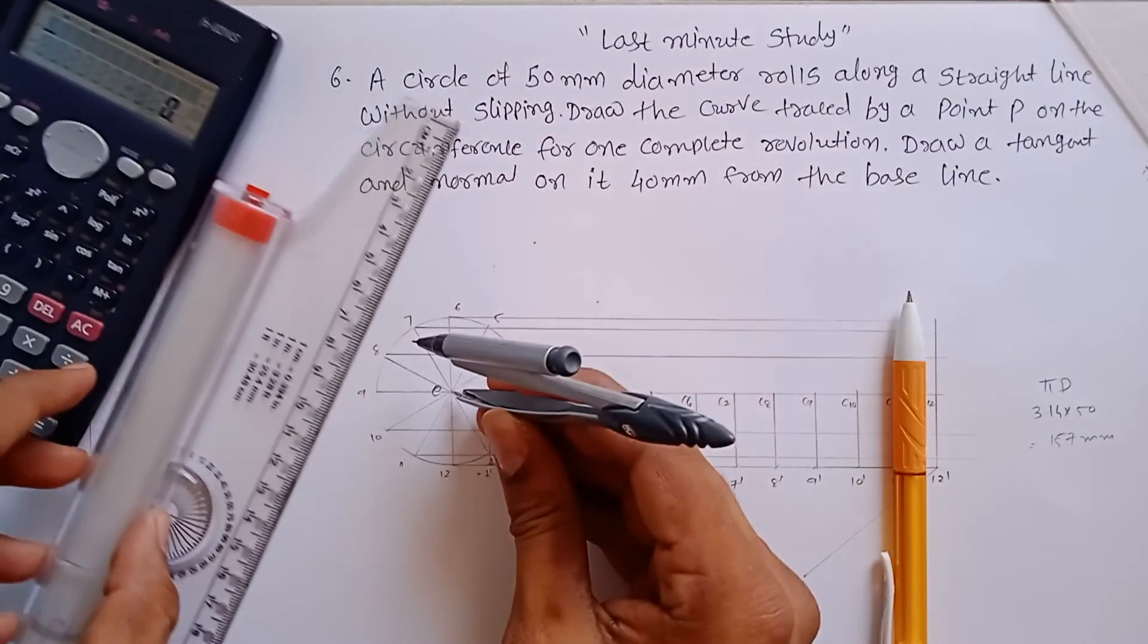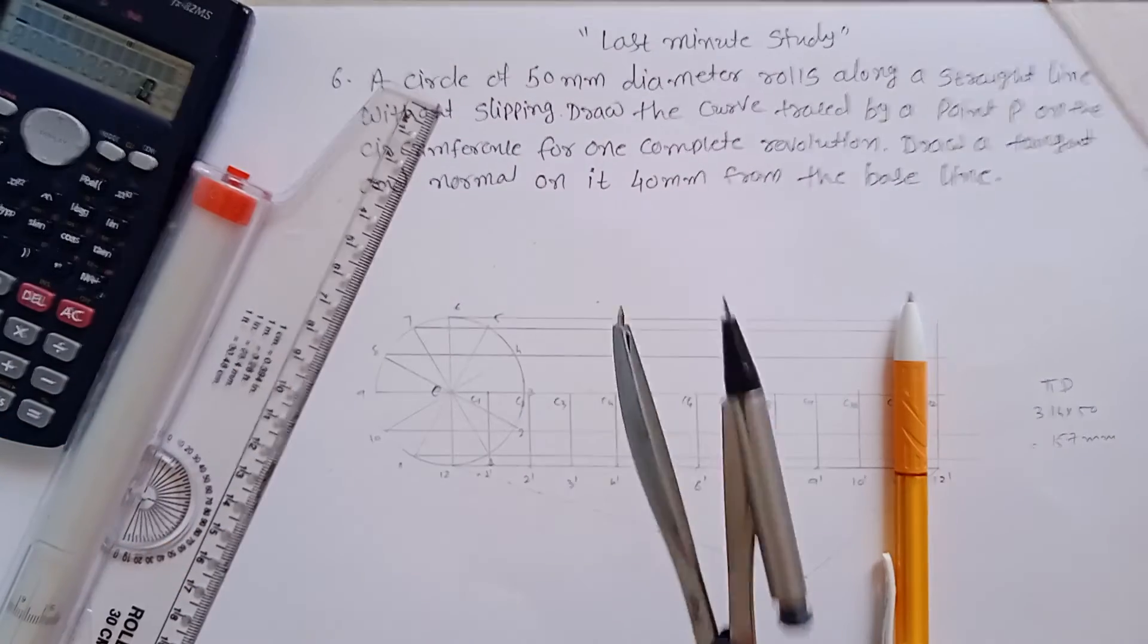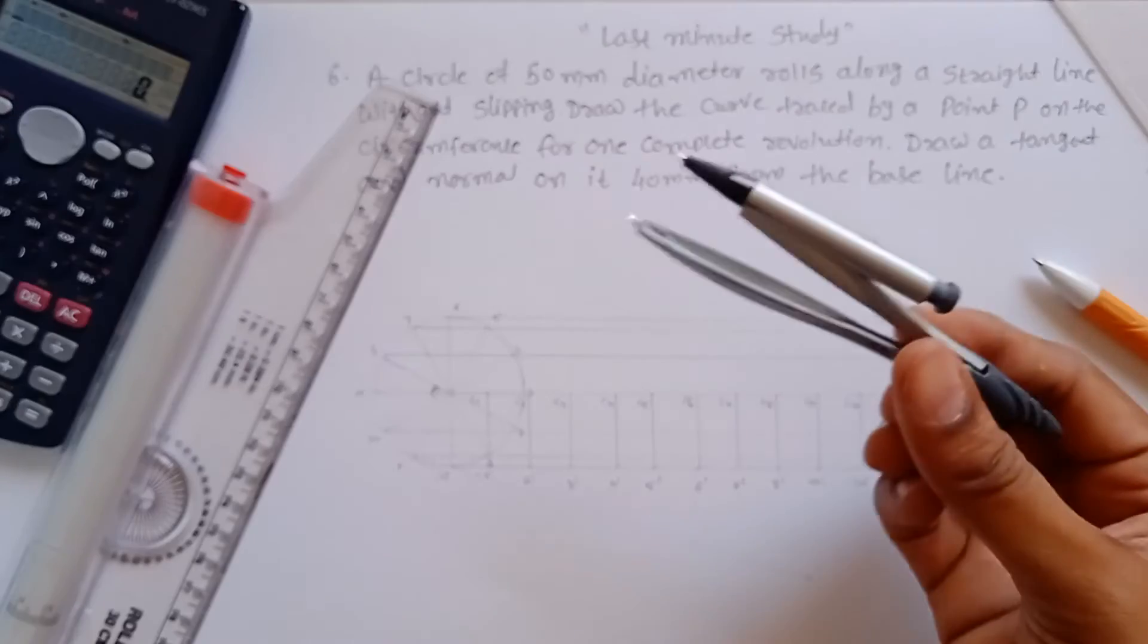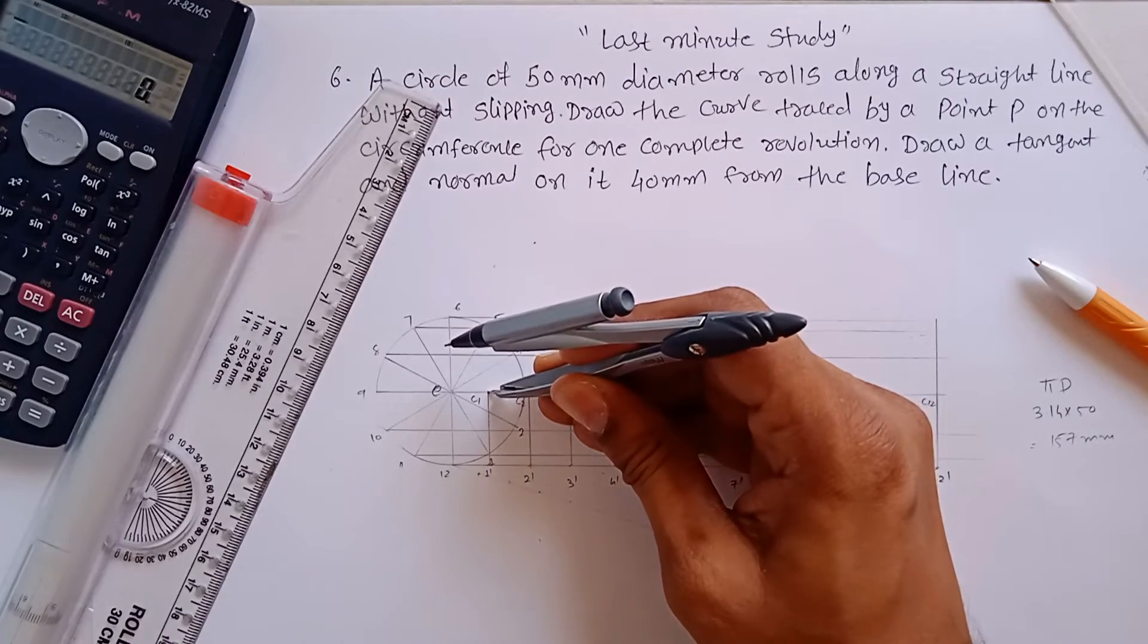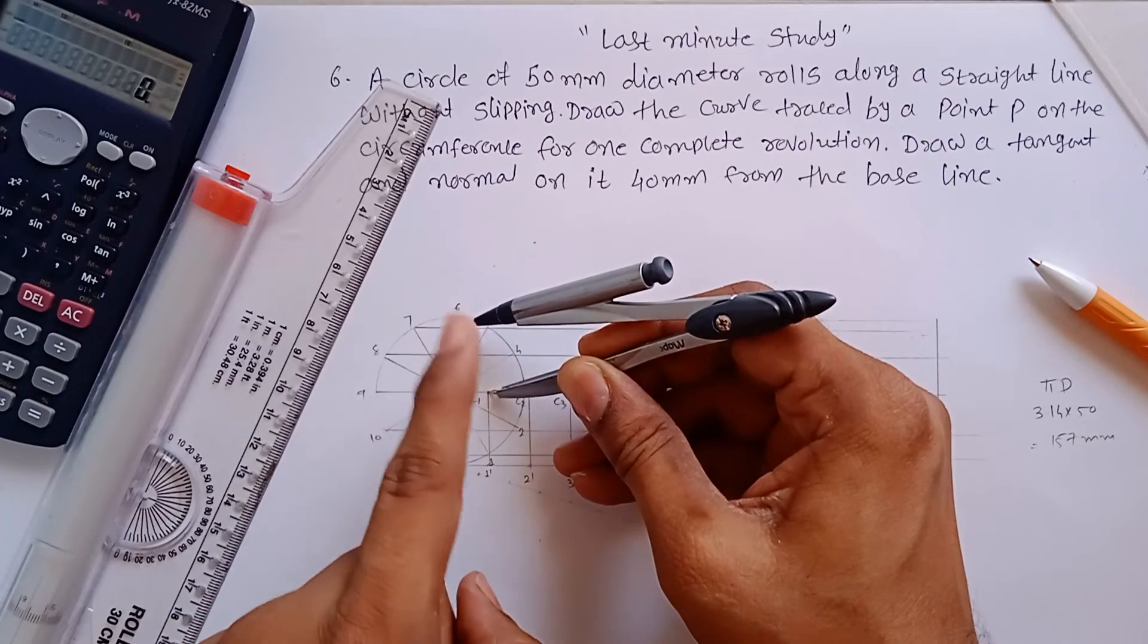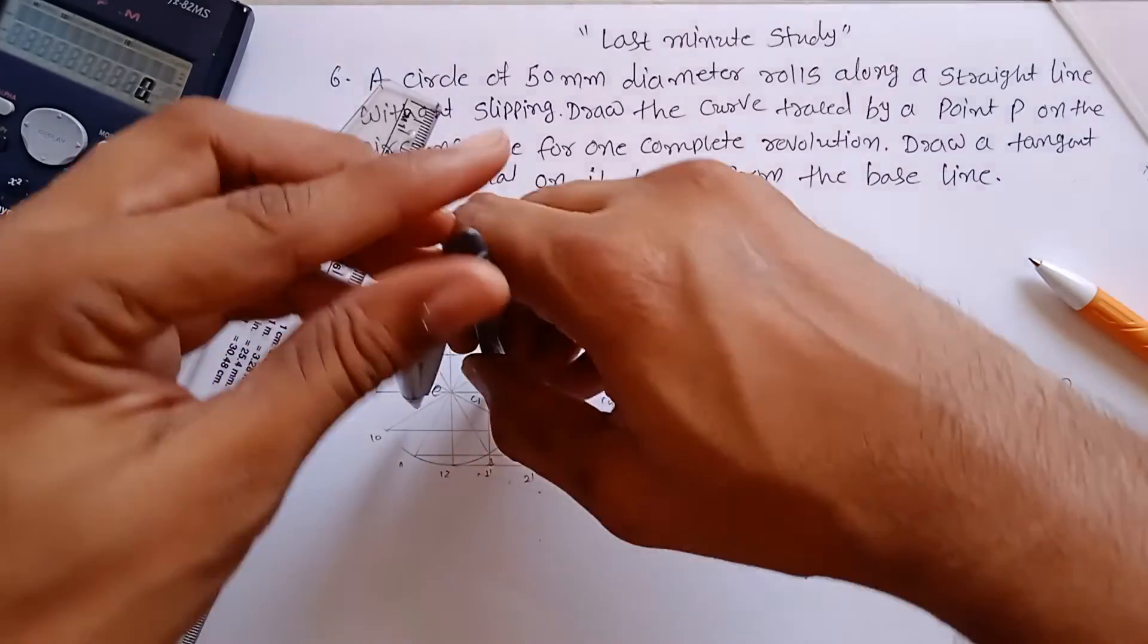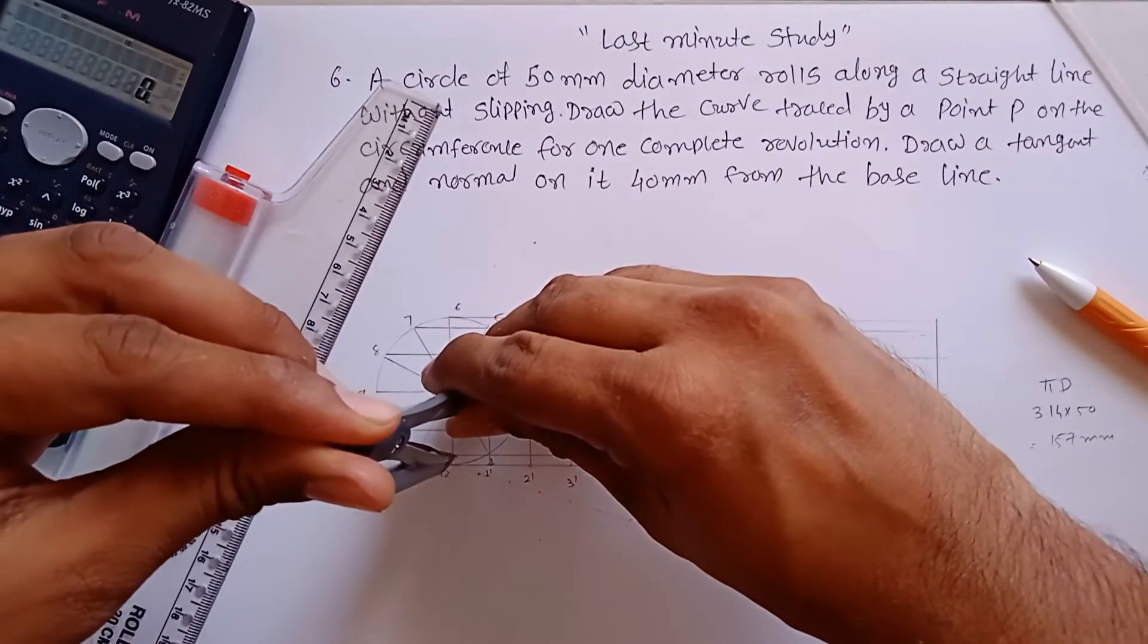Measure the radius - the radius is 2.5, so you have to measure the radius in your rounder. Remember the arc method. You have to put your point on C1 as center, and radius of the circle is your radius, then make an arc on the line which is passing from 1 to 11.